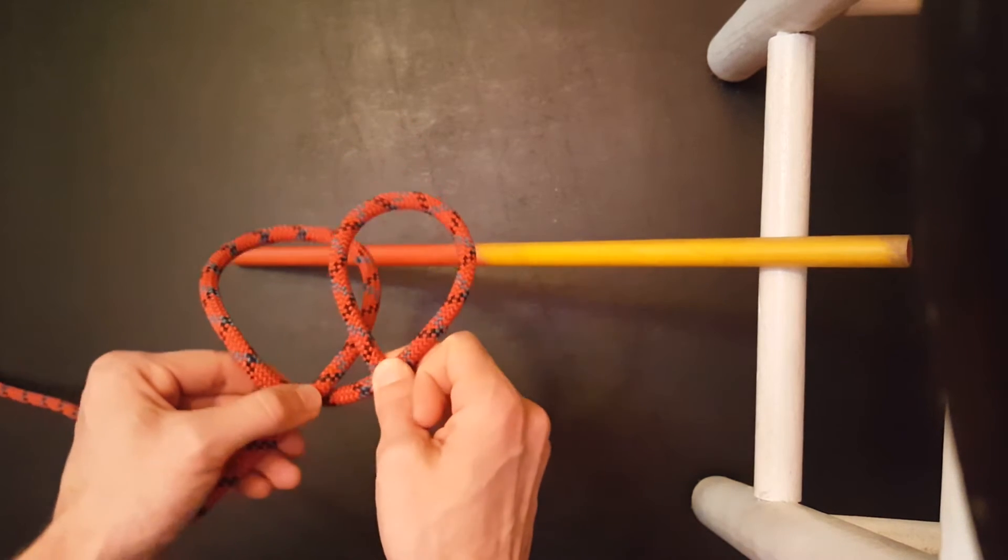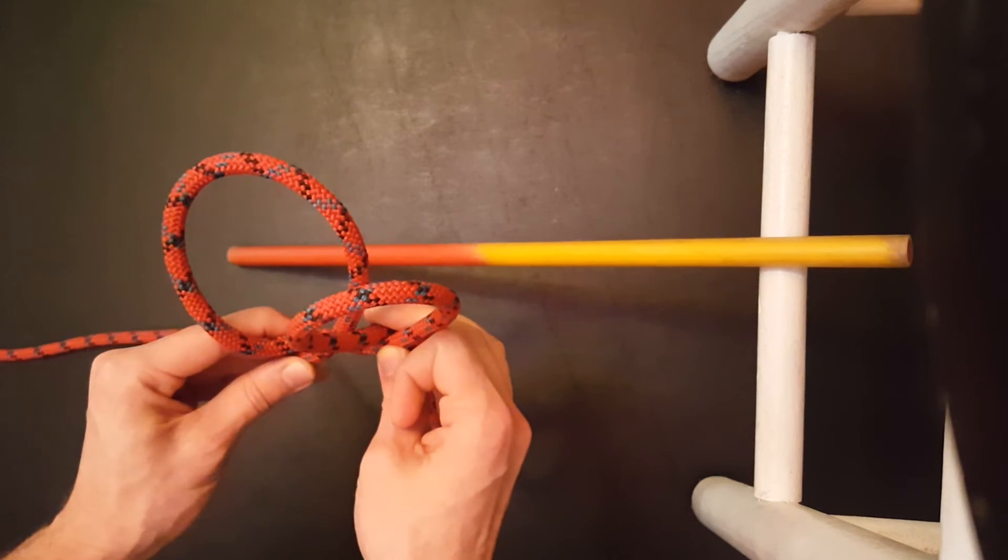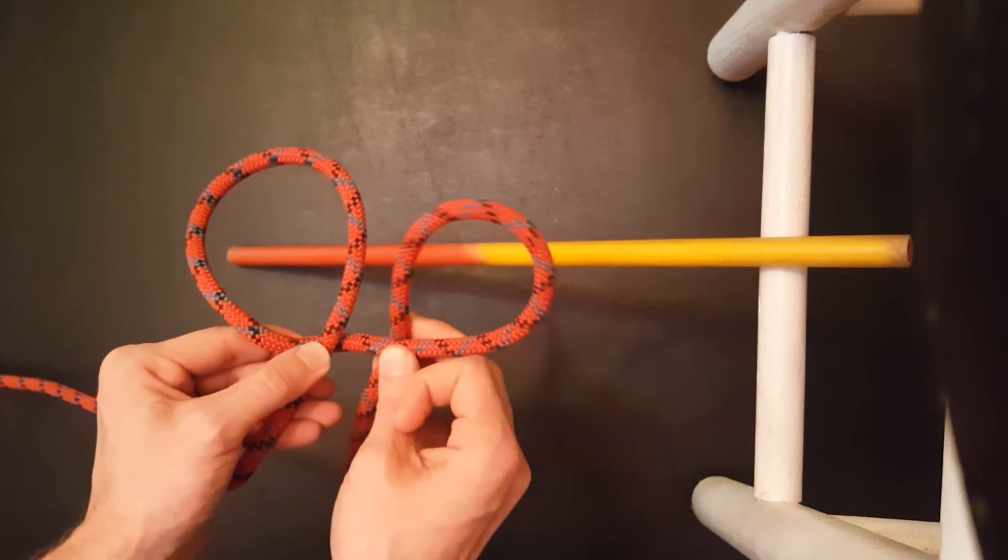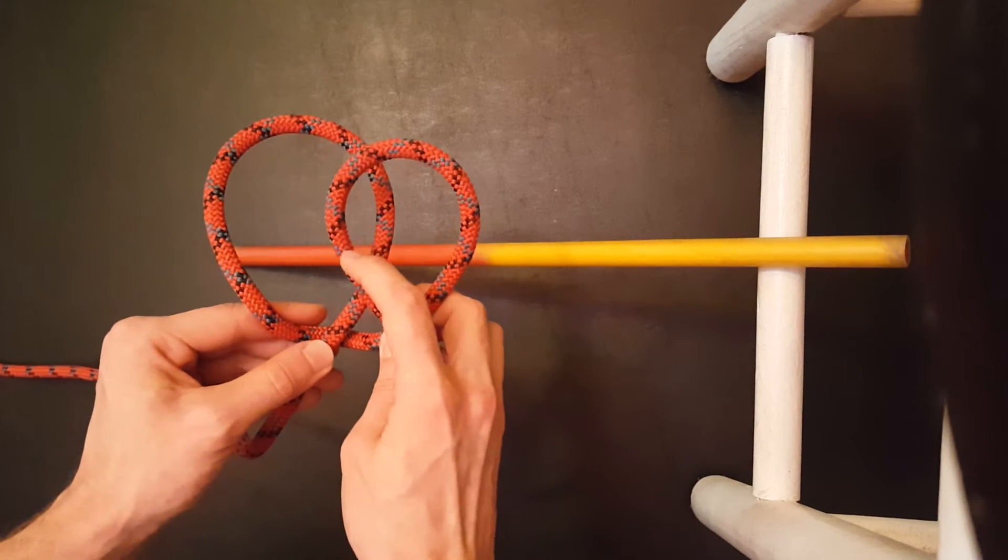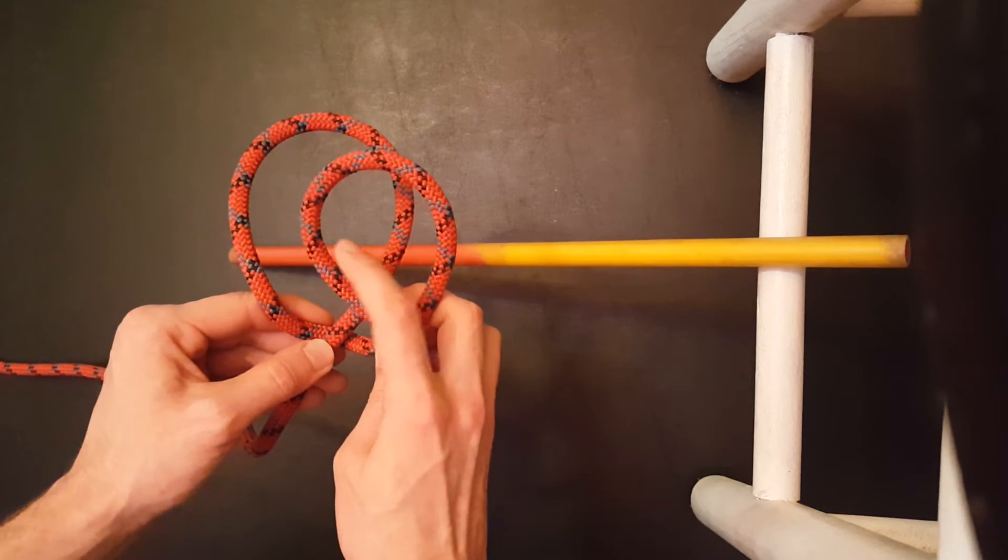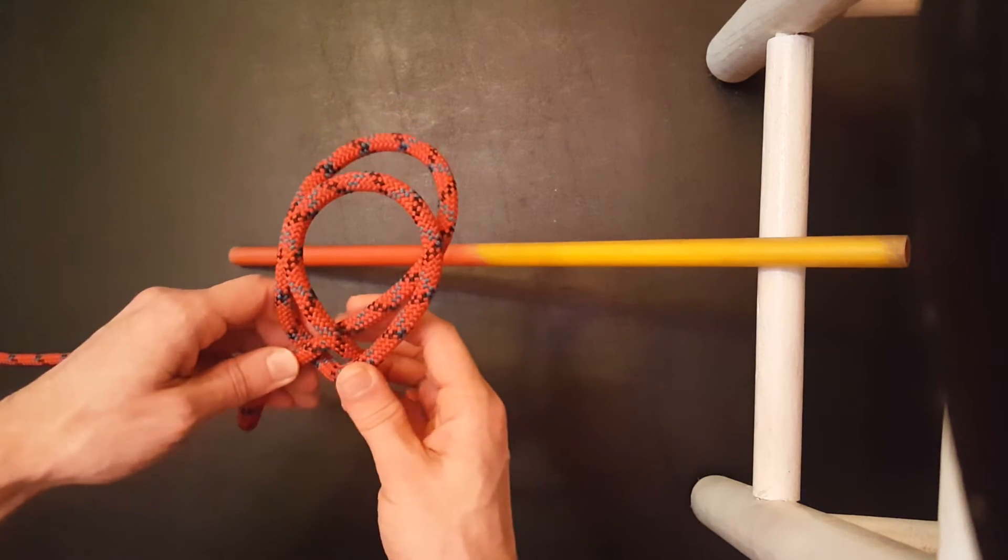We're going to take these two loops and take your right hand, cross it over the top of the second one. So again, over the top of the second one. And now once you have them crossed over, there is your clove hitch.